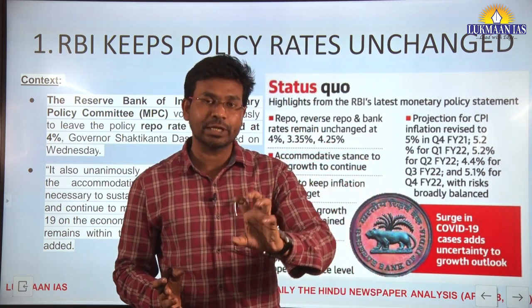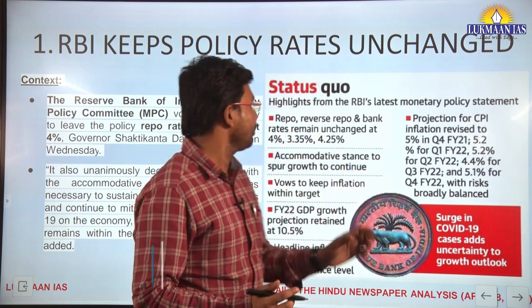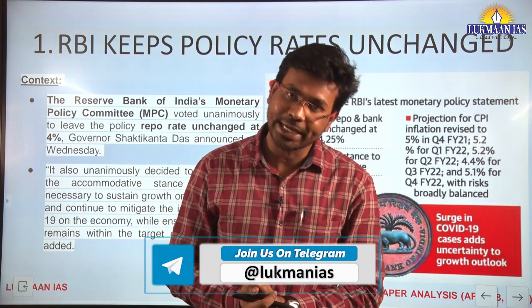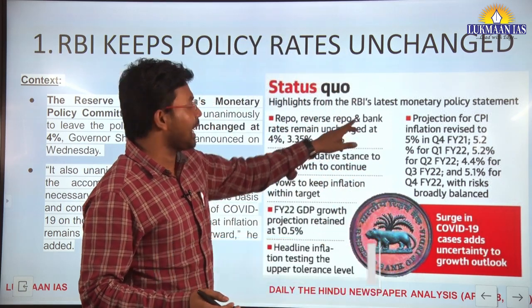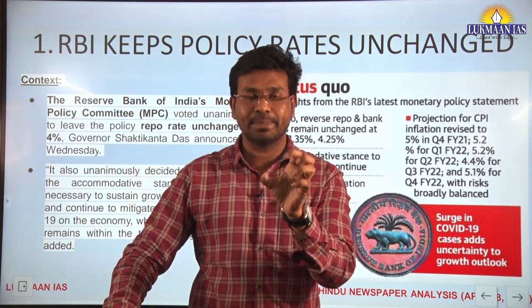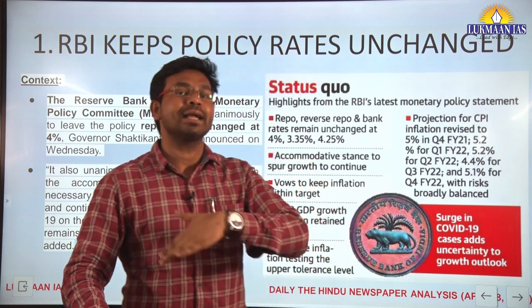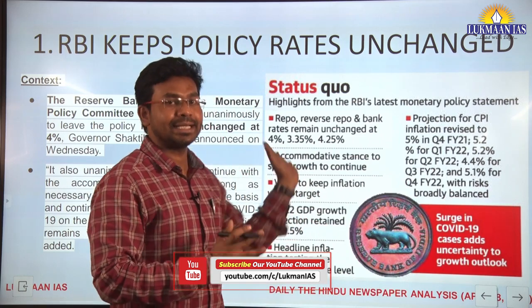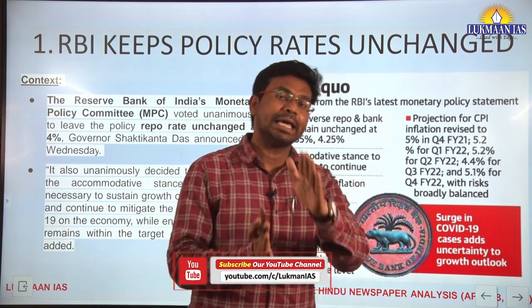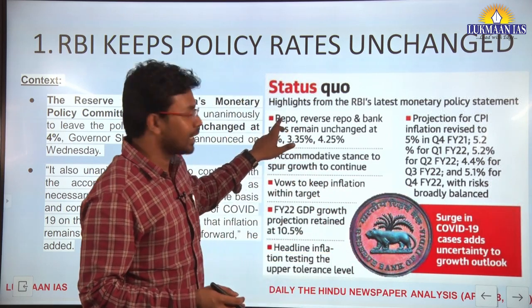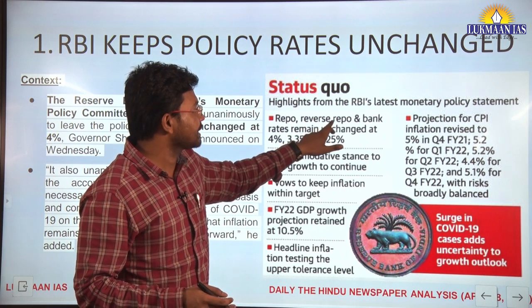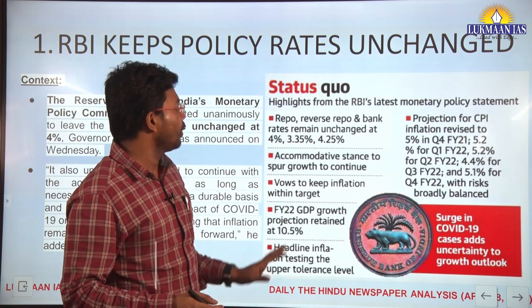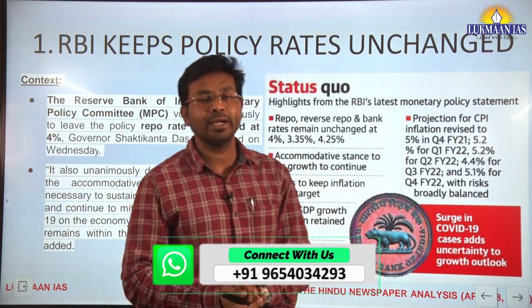Let us understand the constituents of the key policy rates. One is the repo rate, also known as the repurchase obligation rate. Then we have the reverse repo rate and bank rates. These are some aspects of monetary policy. According to the recent revision, the repo rate was kept at 4%, the reverse repo rate at 3.35%, and the bank rate at 4.25%. They adopted an accommodative stance.